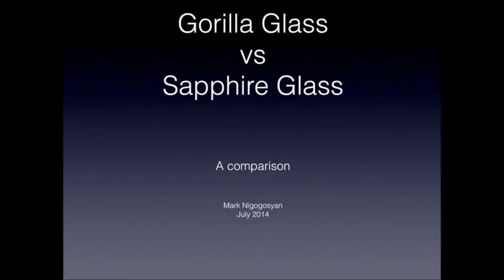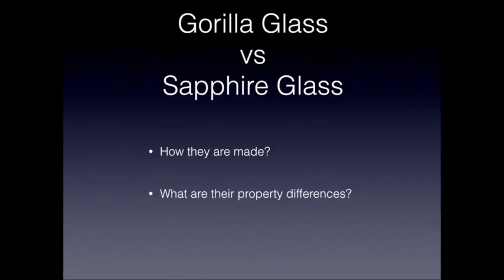You may have heard recently in the news about Apple deciding to use sapphire glass instead of gorilla glass. I thought it would be interesting to look into the two products and get an idea of what the differences are and some of the manufacturing techniques behind the production of both. I'm going to talk about two topics: how each one of these products is made, and their property differences — the advantages and disadvantages of using one over the other.